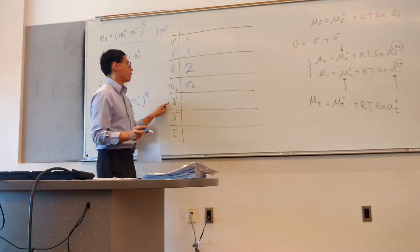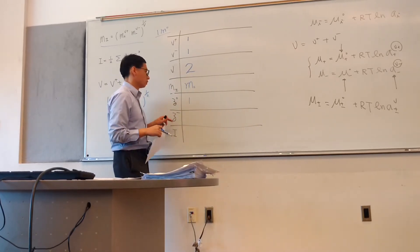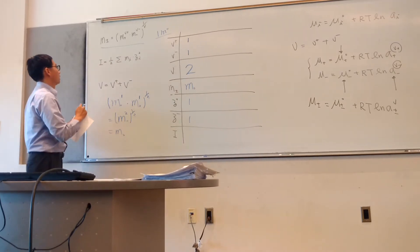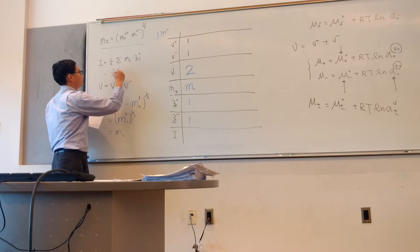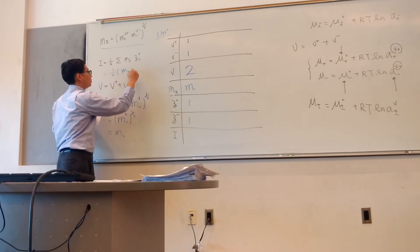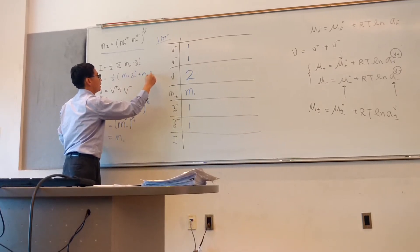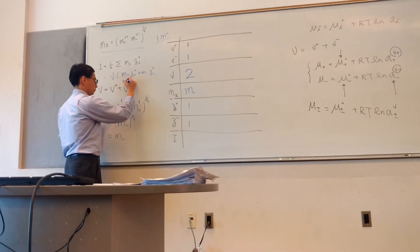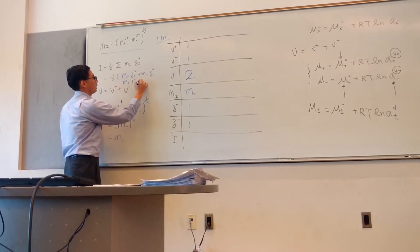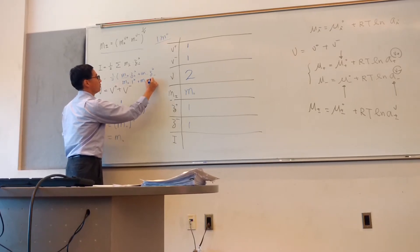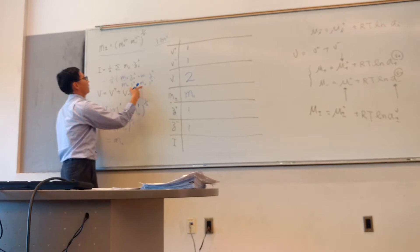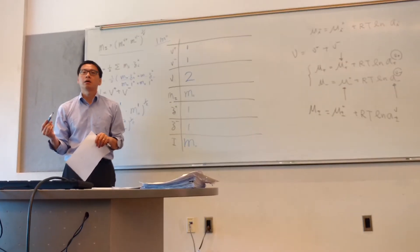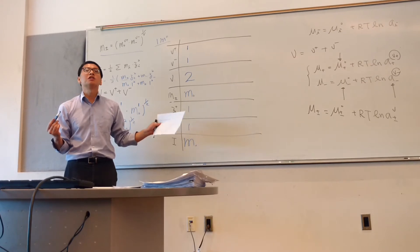For sodium chloride, your Z+ is +1 and Z− is −1. You need to calculate your ionic strength I. I equals one-half times the sum of M+ times Z+² plus M− times Z−². In this case, M+ is M₀ and Z+² is 1², plus M− is M₀ and Z− is also 1², giving 2M₀ divided by 2, so I equals M₀. This is the simplest case.